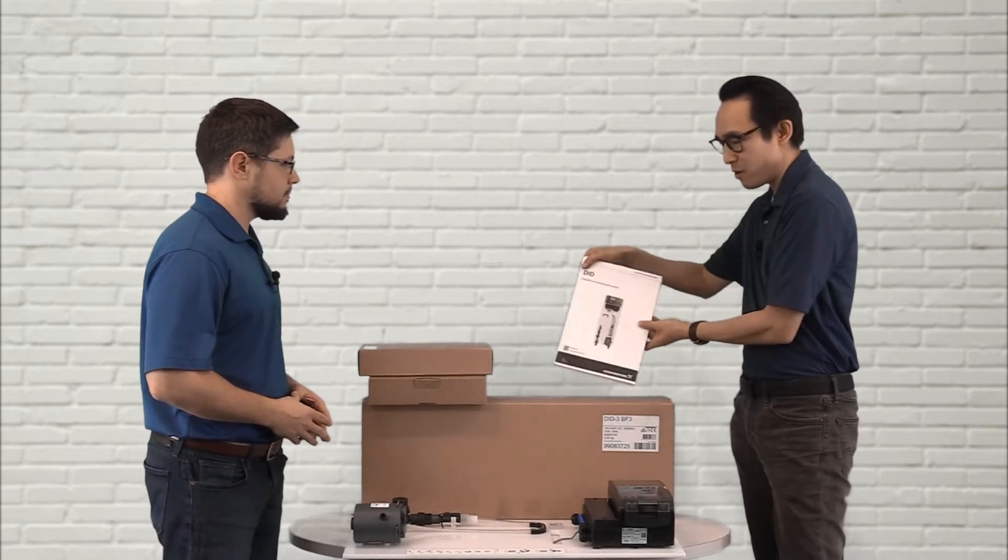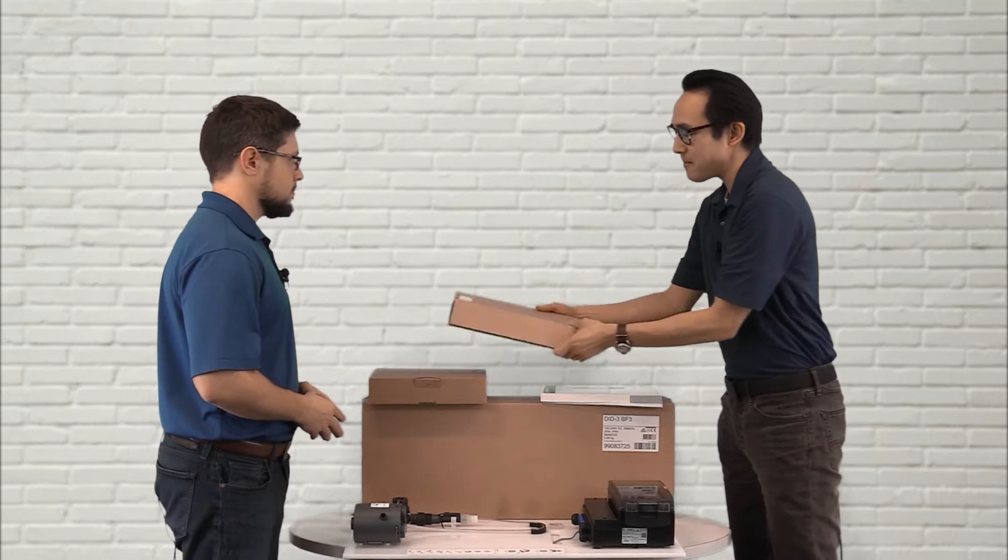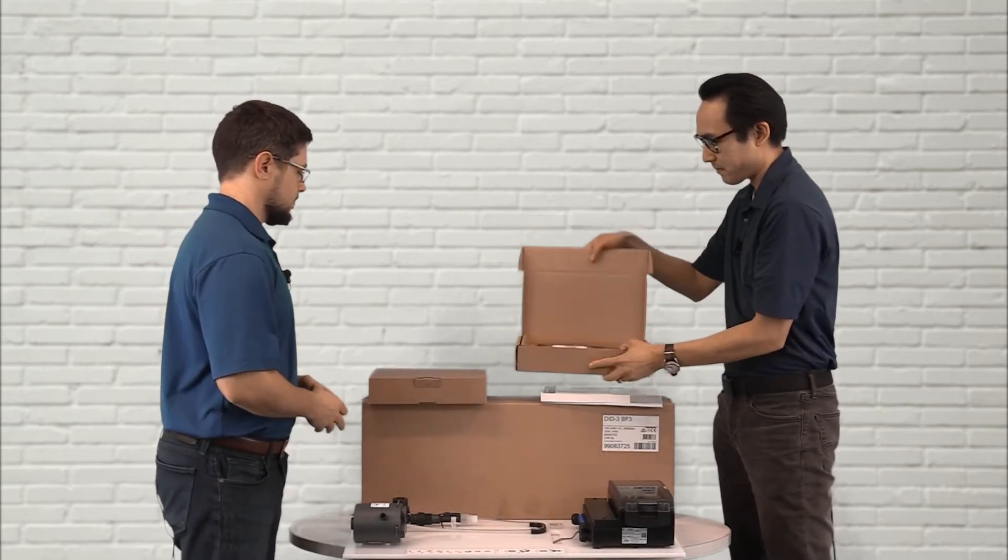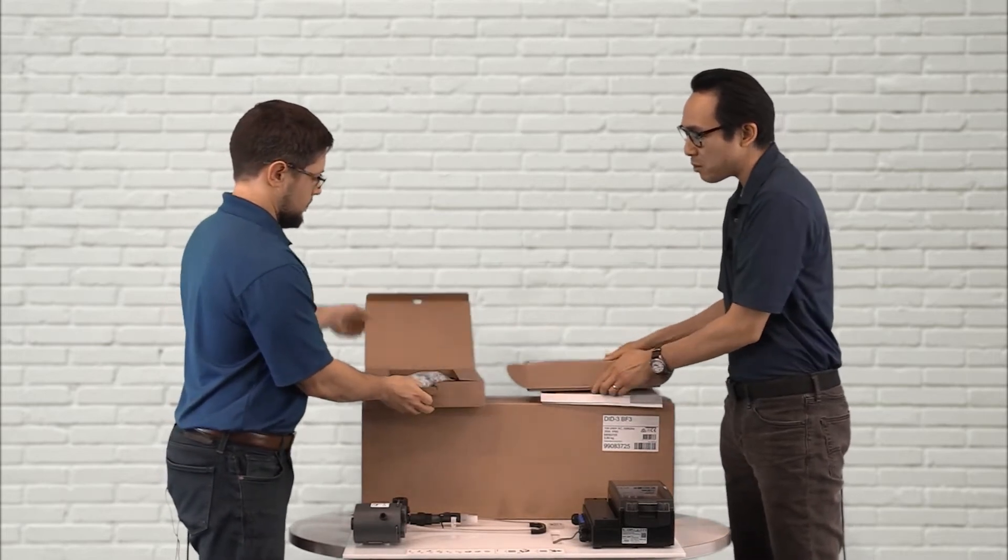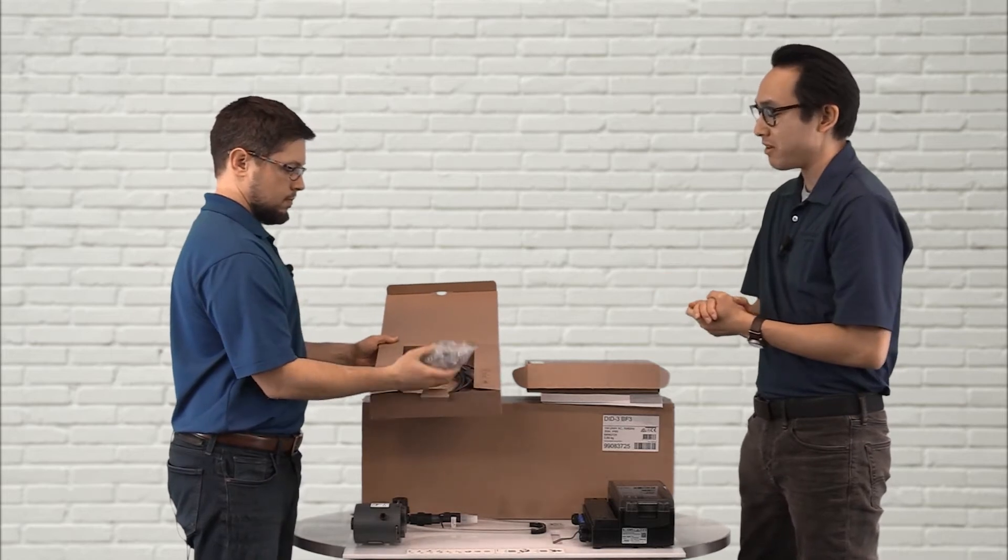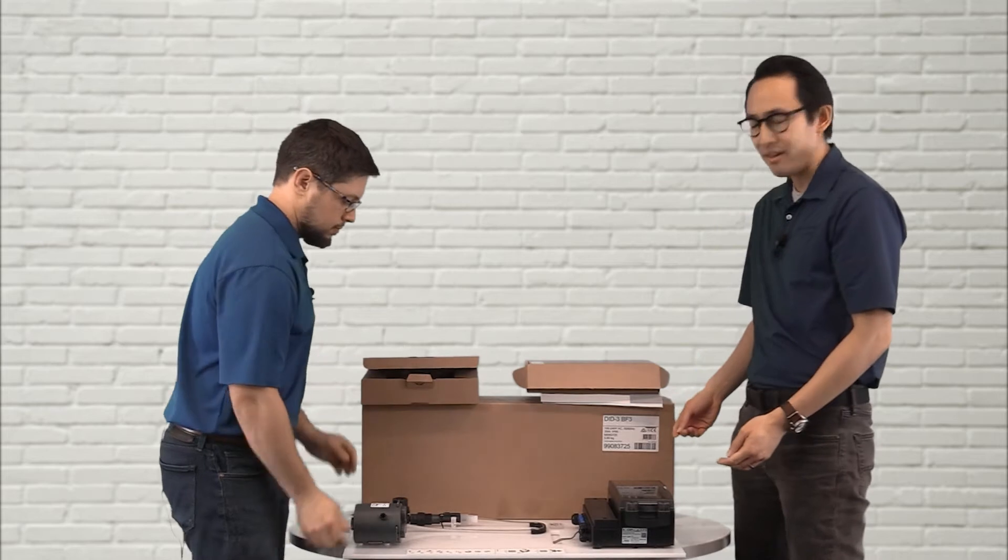When you open the package for the first time, you're going to see the DID instruction manual, a box which contains the sensor and the electrolyte, and the box over here contains the sensor cables and the connection pieces for the inlet and outlets. And then lastly, we have the preassembled DID system.